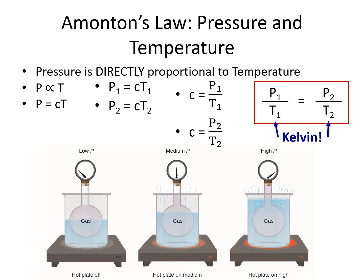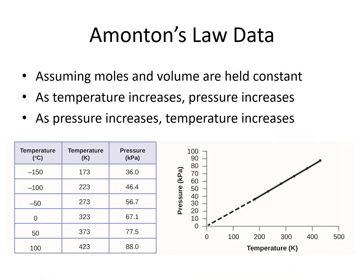If you look at the picture, the hot plate is off and the pressure is low for that gas. When the hot plate is on medium heat, the pressure is about medium, and when the hot plate is on high, the pressure is high. So as the temperature went up, the pressure went up — they're directly proportional. Amontons' law assumes that moles and volume are held constant. If those two things are not held constant, then we can't use Amontons' law.